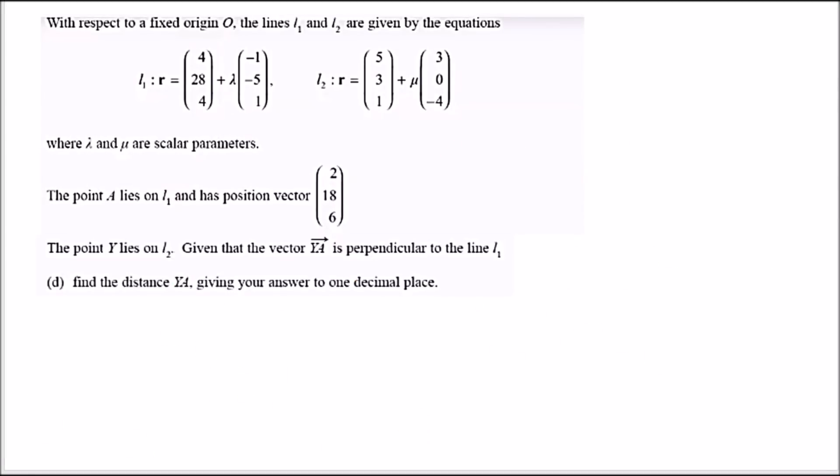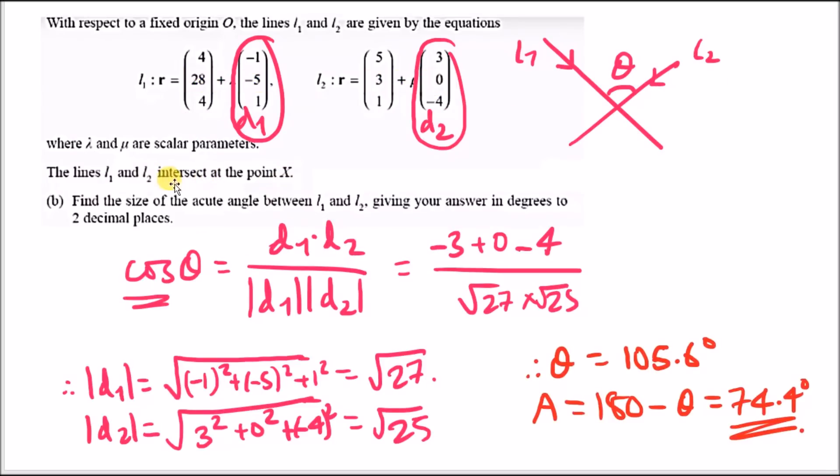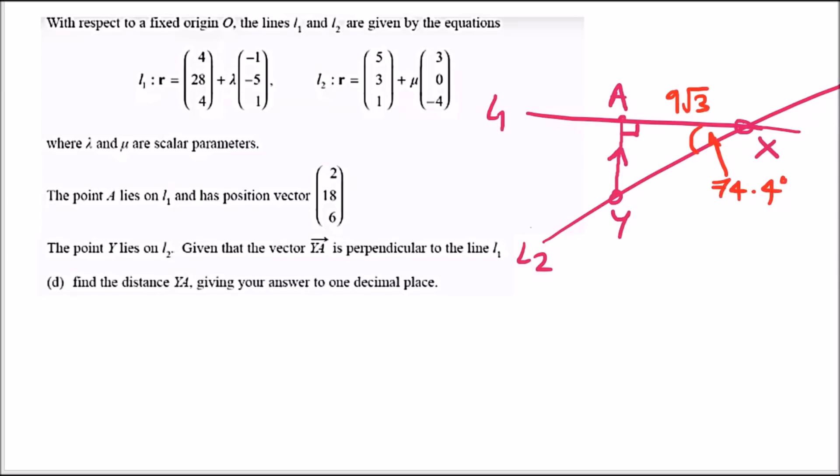For part d, point Y lies on L2 and the vector YA is perpendicular to line L1, where point A lies on L1 with this position vector. We need to calculate the distance YA. Let's see how the diagram looks. We've got line L2 crossing here. Recall L1 and L2 intersect at point X. We also calculated the acute angle of 74.4 degrees and the line AX of 9 root 3. We've got a clean right angle triangle to work with.